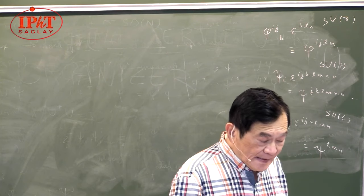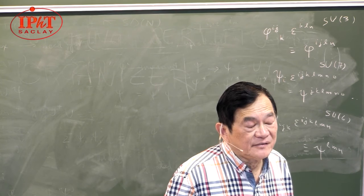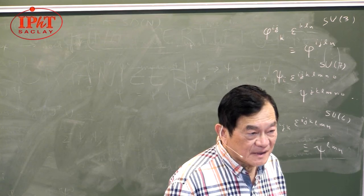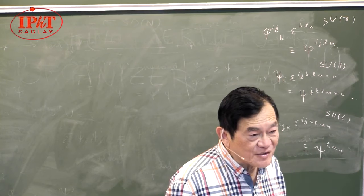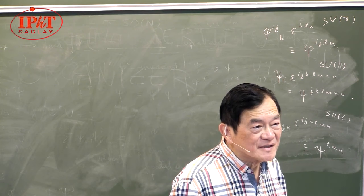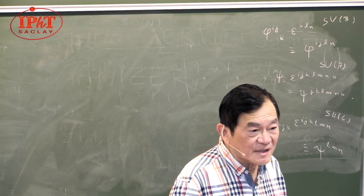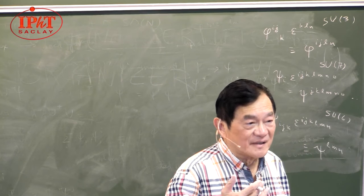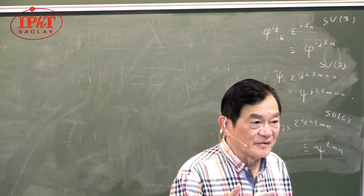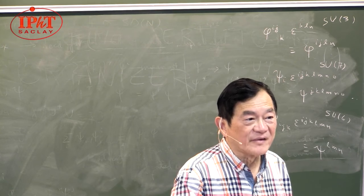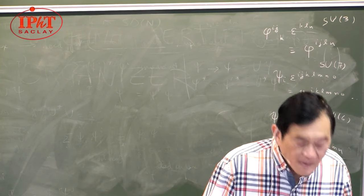This duality works not only for SU groups but also for SO groups via the ε symbol. The difference is that SU(N) groups have two ε symbols while SO groups, the orthogonal groups, have only one. We live in even-dimensional spacetime — the Lorentz group is SO(3,1), or by analytic continuation SO(4). For SO(4), an anti-symmetric tensor with two indices is dual to a tensor with also two indices. This is the electric field and the magnetic field — F_{μν} — and the same kind of thing happens in string theory.